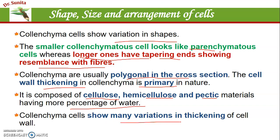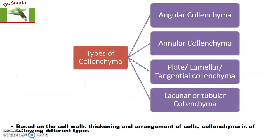This shows many variations in thickening. In some, thickening occurs at angles; in some, at tangential walls; in some, at intercellular spaces. Based on these thickenings, colenchyma is divided into different types: angular colenchyma, annular colenchyma, plate/lamellar and tangential colenchyma, and lacunar and tubular colenchyma.